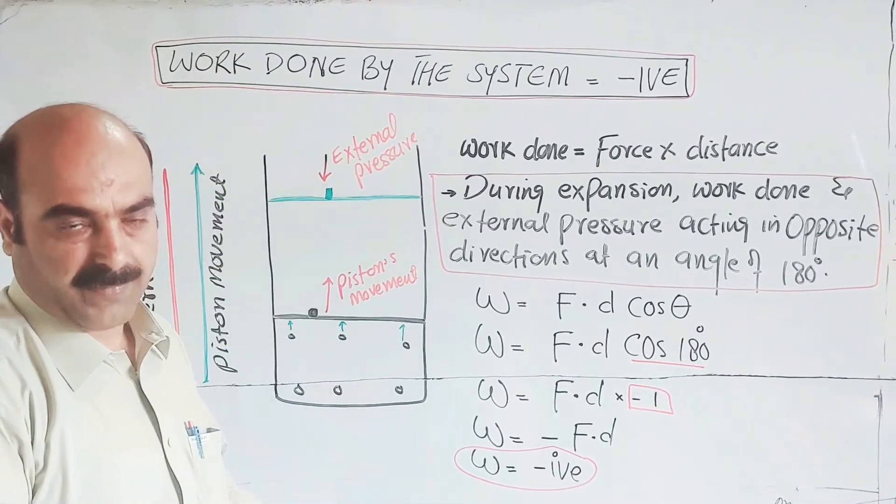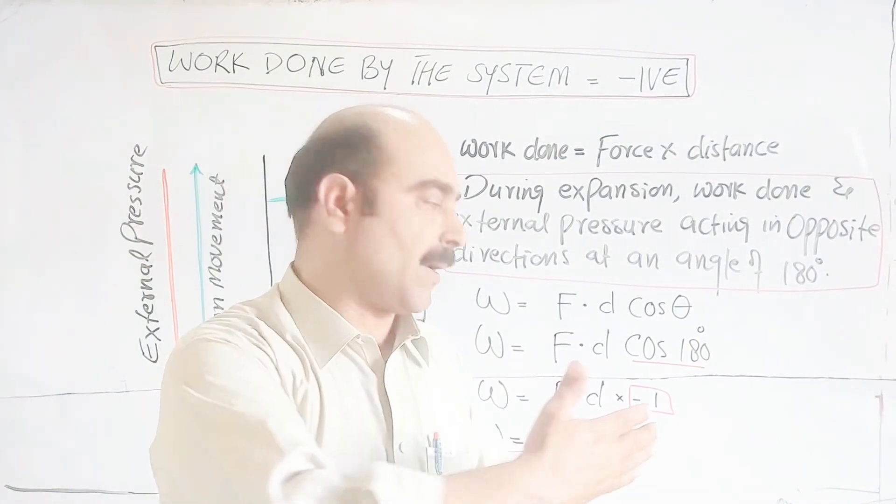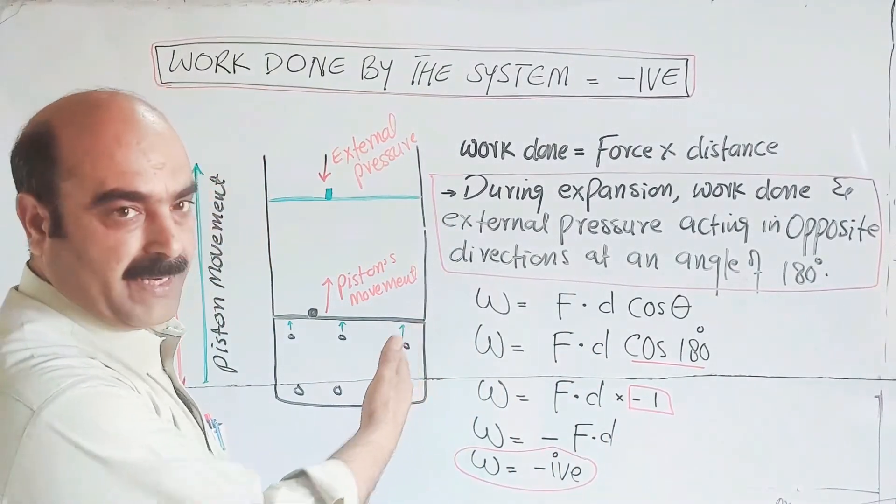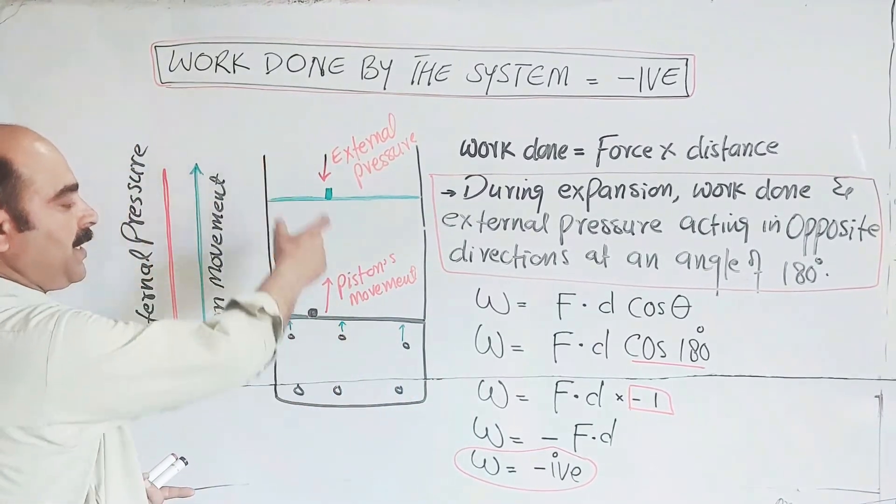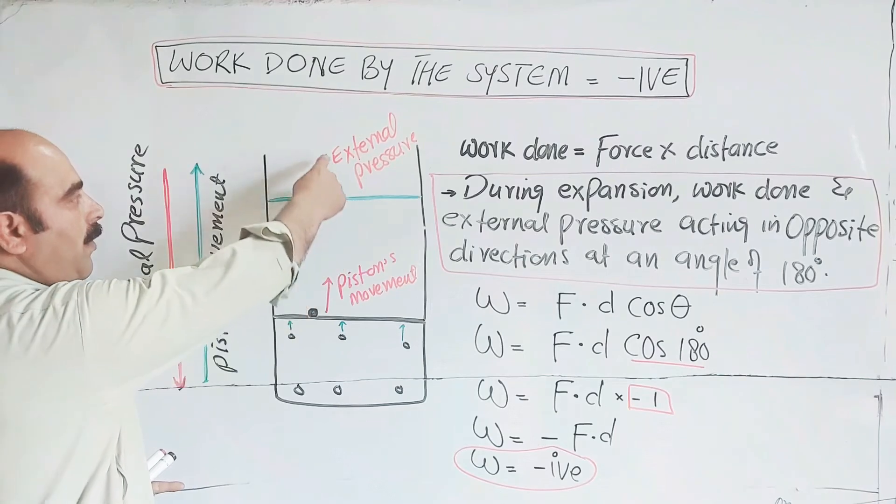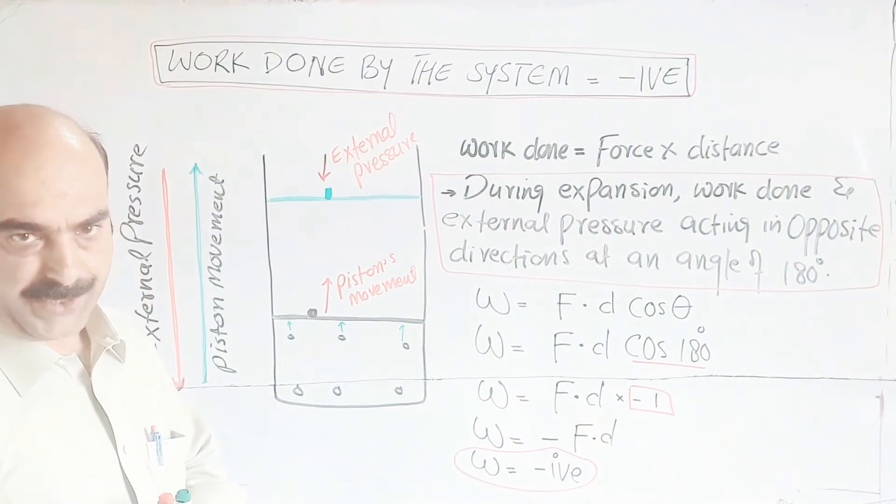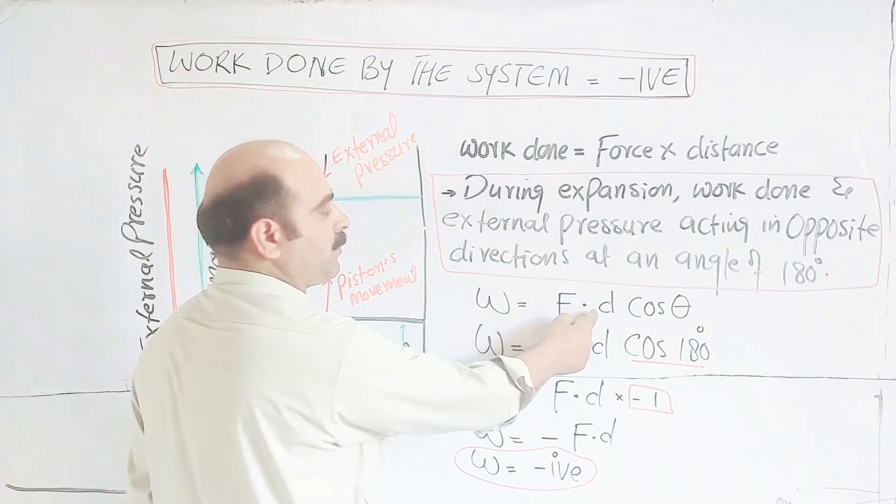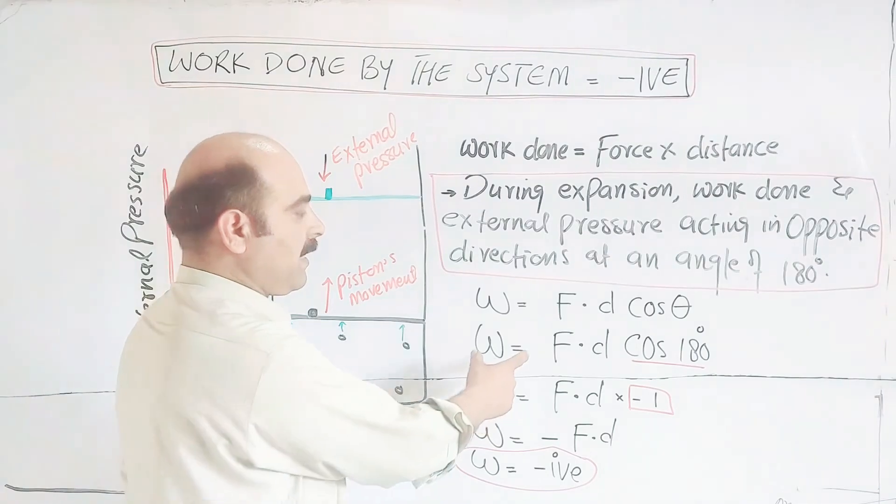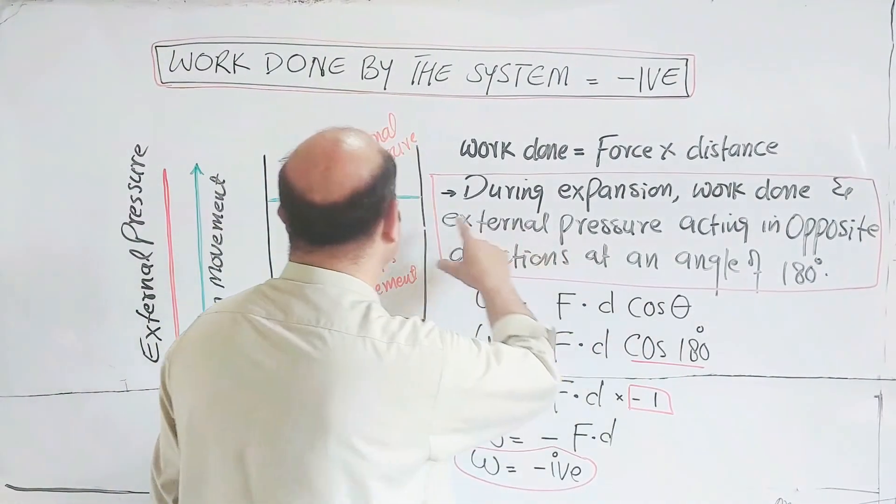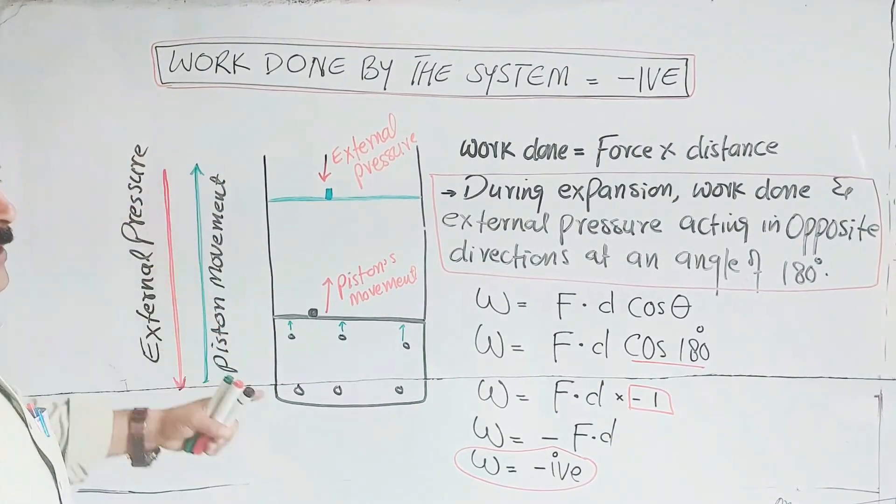By convention, work done by the system against external pressure, the work done is negative. This is the mathematical proof. Simple proof. During expansion, work done and external pressure are in opposite directions. Work done is force multiplied by distance times cos theta.